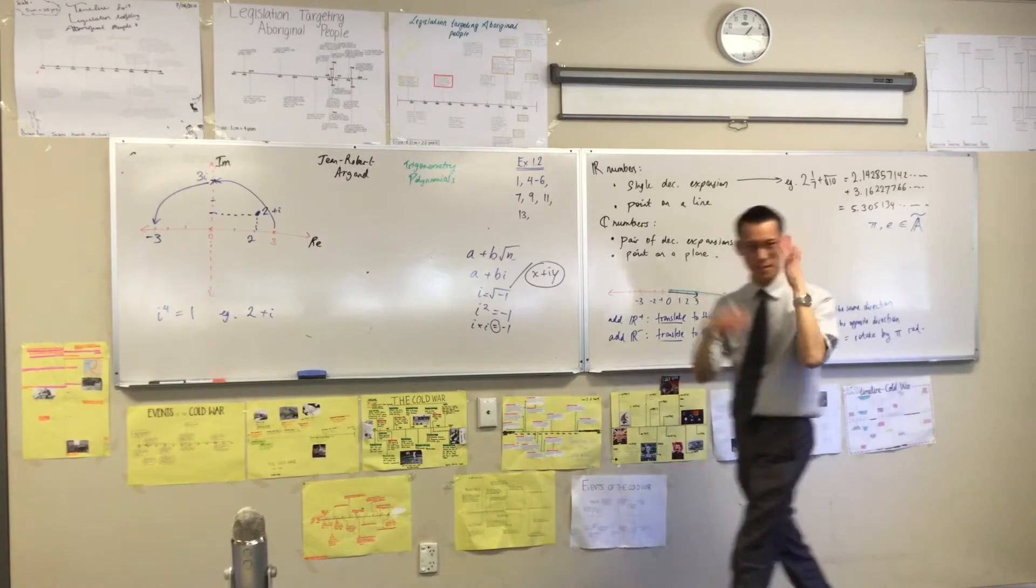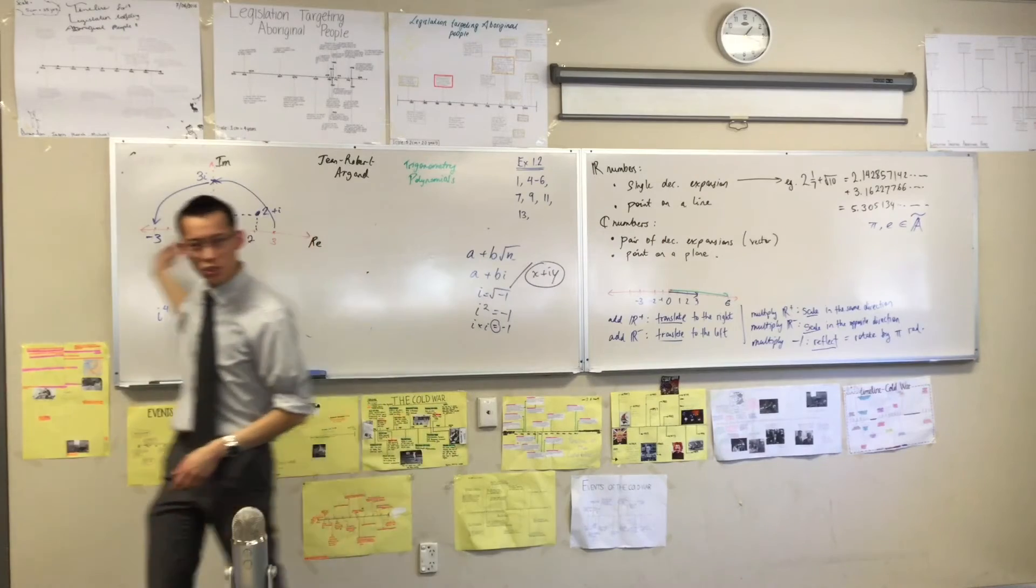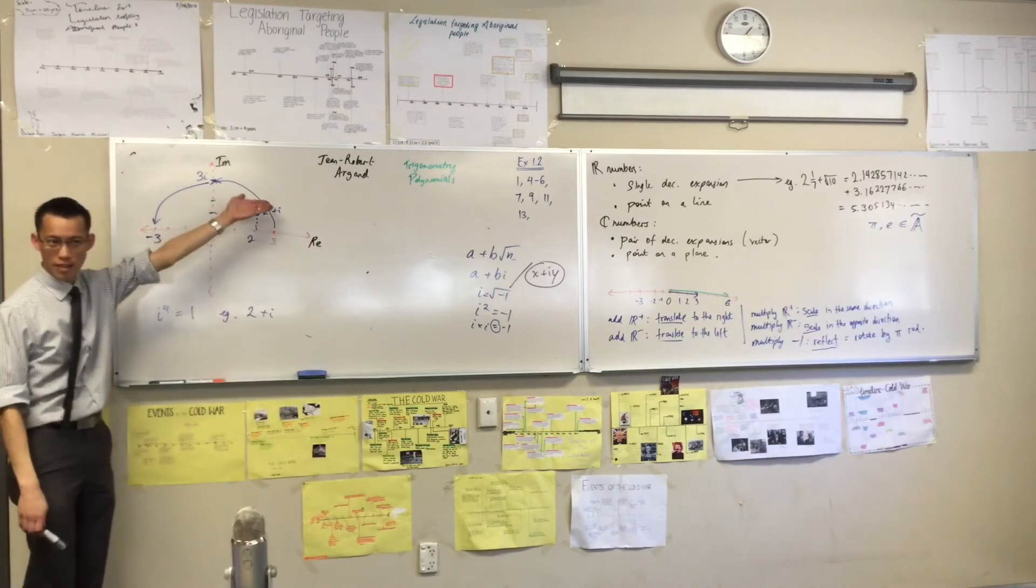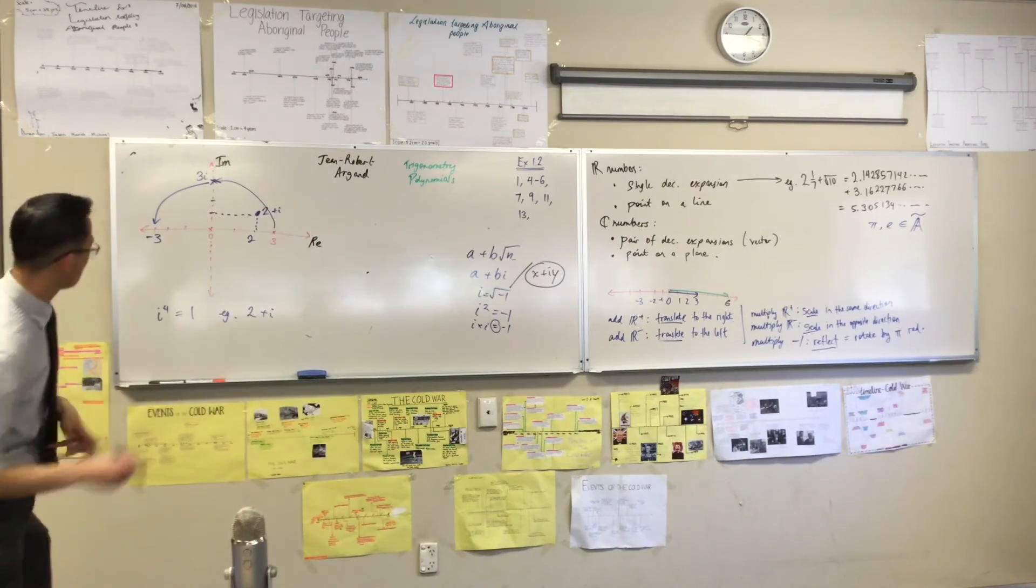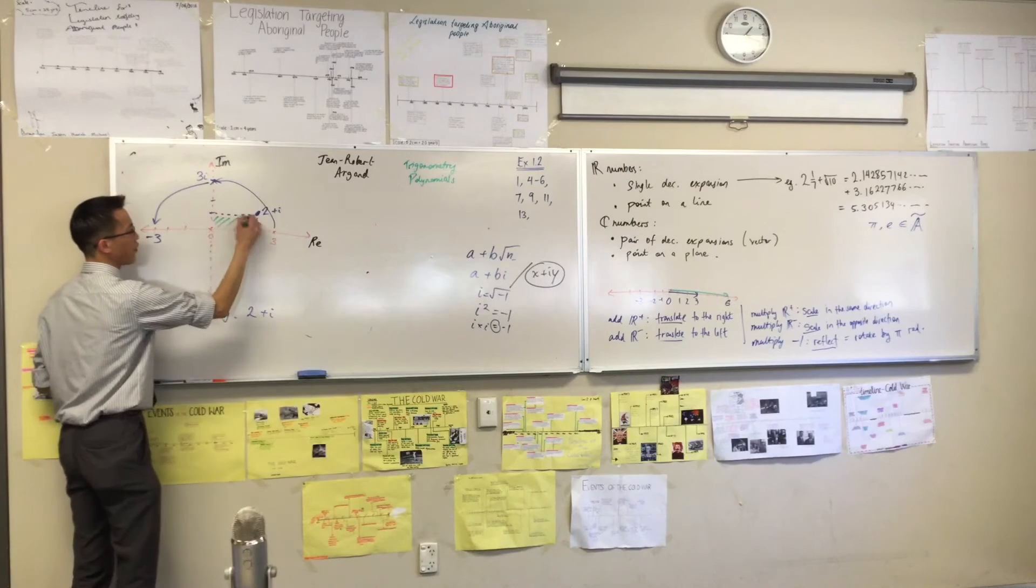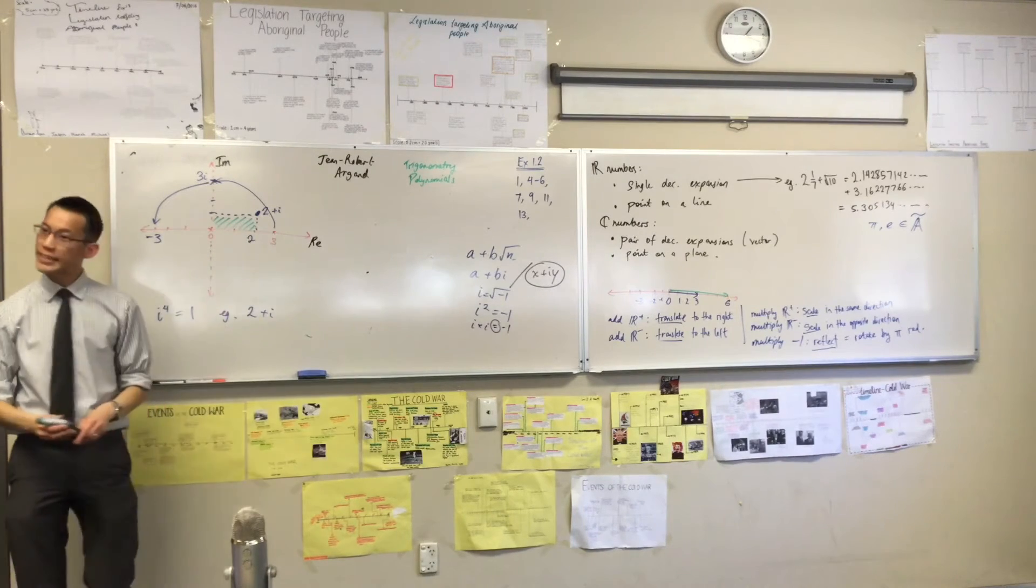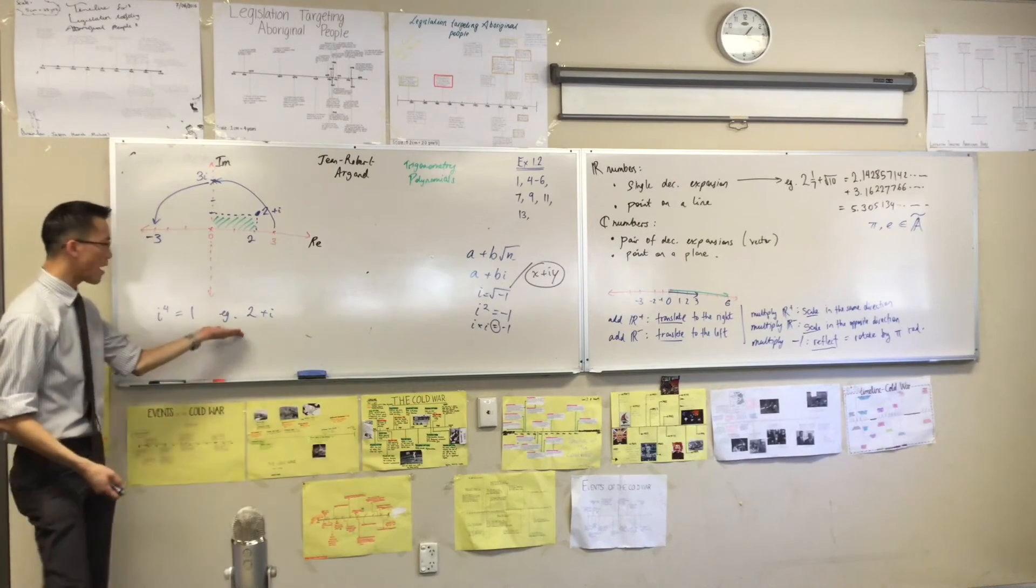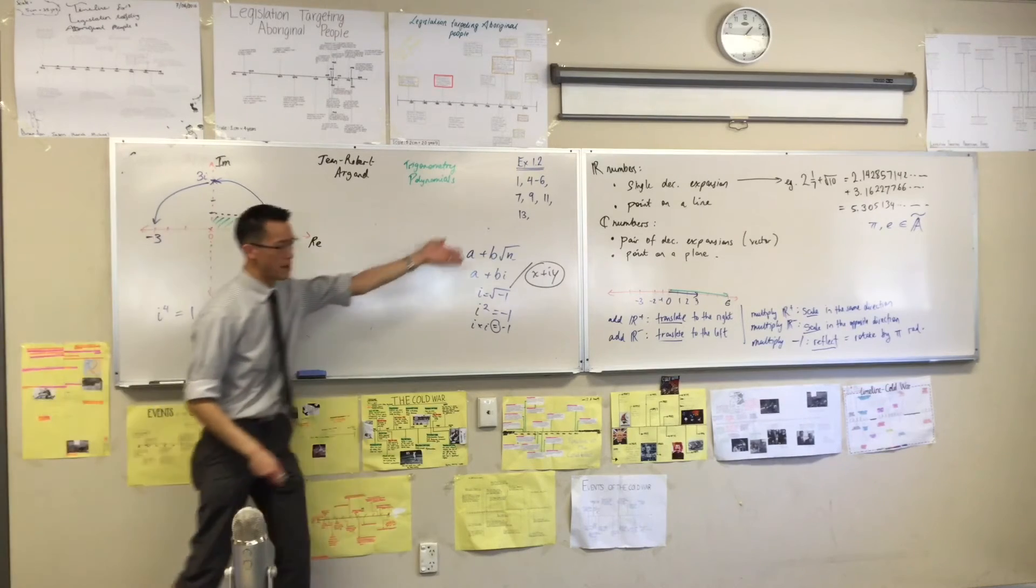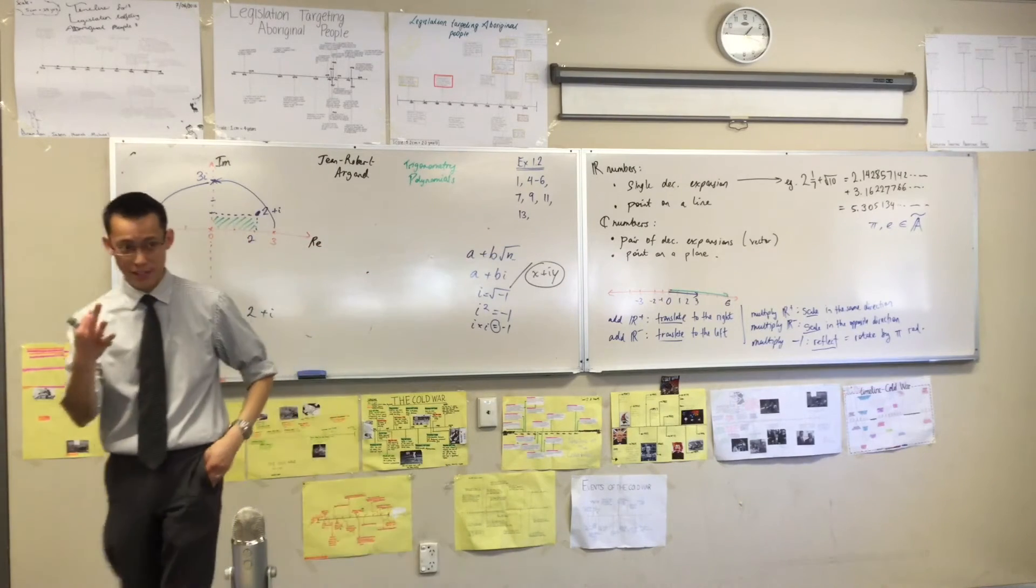Now, we need some language here. Because you can see, the way that I've drawn 2 plus i demonstrates that you've actually shaded off here a rectangle. So therefore, when you write a number like this, 2 plus i, a plus bi, x plus iy, we give that three different names. Just to confuse you.